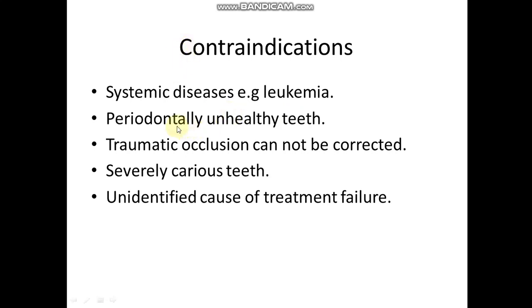Local causes or local factors include periodontally unhealthy teeth, in case of bone resorption or bone loss and grade 3 teeth mobility — this is also one of the contraindications. Traumatic occlusion that cannot be corrected is also a contraindication. Severely carious teeth where the tooth is not restorable, and in case of unidentified cause of treatment failure — where we don't know why the conventional root canal treatment failed — in this case we actually cannot do a surgical operation because we don't know the cause of the failure.